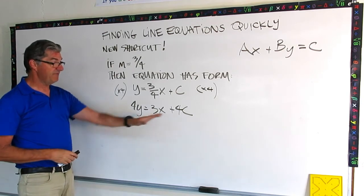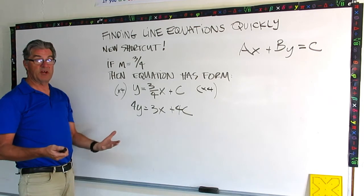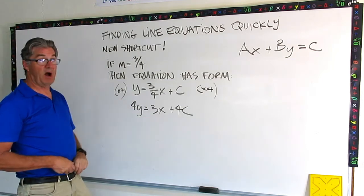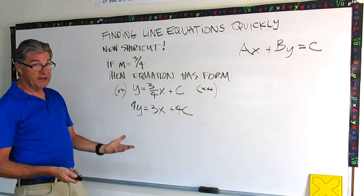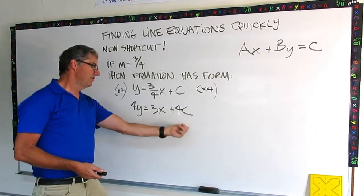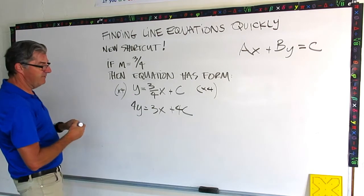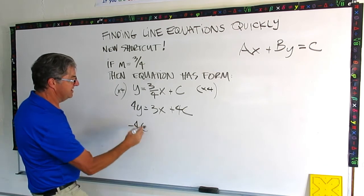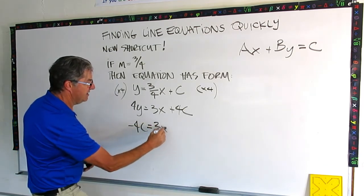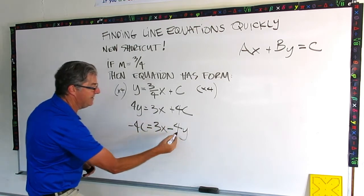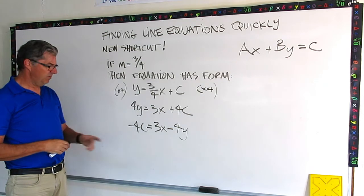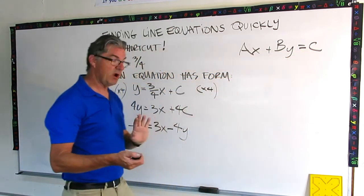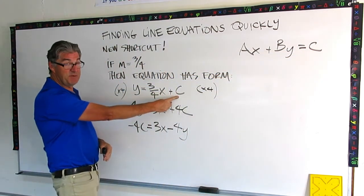So check it out, I no longer have any fractions. So now I just need to organize this equation so that I have my c on one side and then I have my x and y on the other side and my x is positive. So check this out. Now x is already positive so I just need to move the 4y over here and the 4c over there. So I'm going to subtract 4y from each side and subtract 4c from each side. So what I'm going to get is minus 4c equals 3x minus 4y.